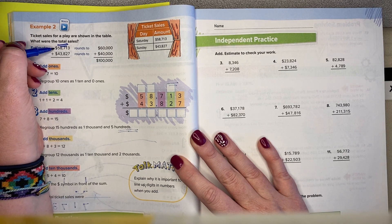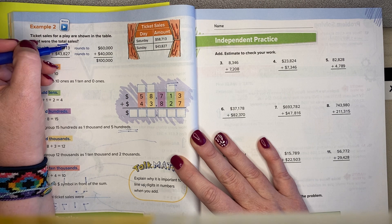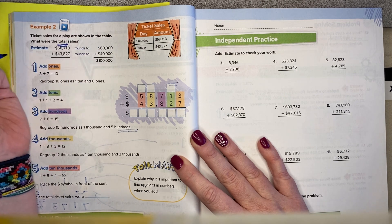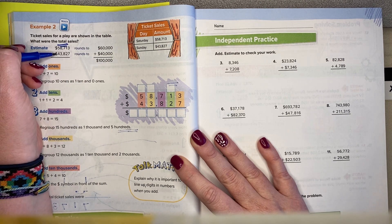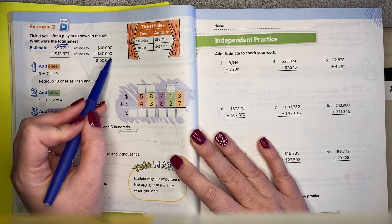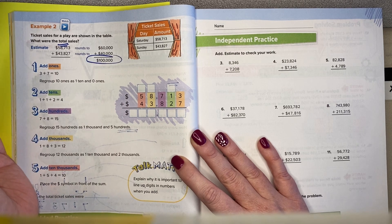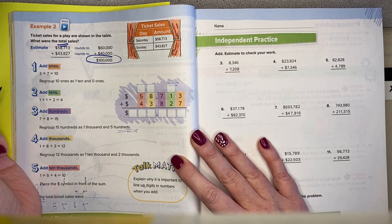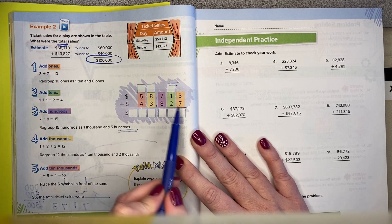So my estimate, they say that $58,713 rounds to $60,000. That makes sense. And that $43,827 rounds to $40,000. That makes sense. And they're saying that my answer is going to be near $100,000. Okay, so we're going to just go through the steps.